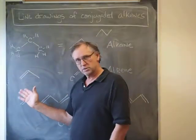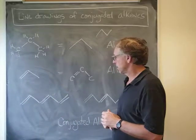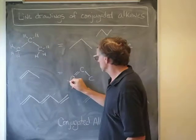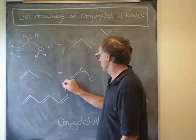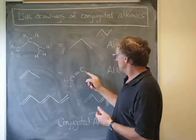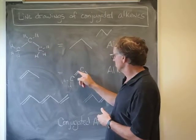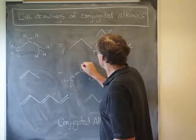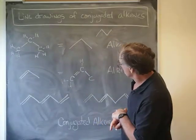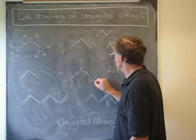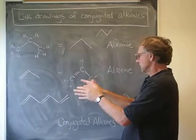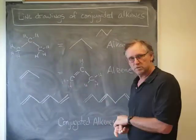No hydrogens are drawn here because that's the convention in a line drawing. But I can tell that since this carbon is bonded to two other carbons and has a double bond to another carbon, it must have two hydrogens attached to it. How many hydrogens are attached to that carbon? Well, this carbon forms one, two, three bonds, so it only has room for one more. And finally, this last carbon is only bonded to one carbon, so it must have three hydrogens attached to it. This is an alkene because it has a carbon-carbon double bond.